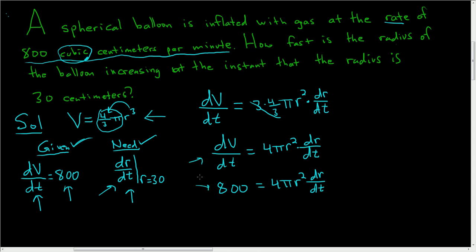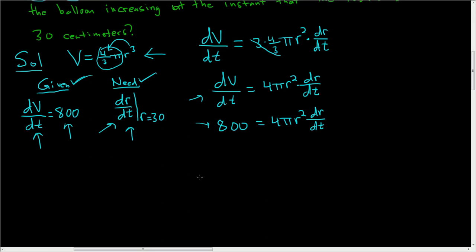Now we'll solve for dr/dt, so let's go ahead and do that. So we'll divide both sides by 4 pi r squared, so these cancel, so we're left with dr/dt equals, well, 4 goes into 800 200 times, so we have 200 over pi r squared, right, because 800 over 4 is equal to 200.